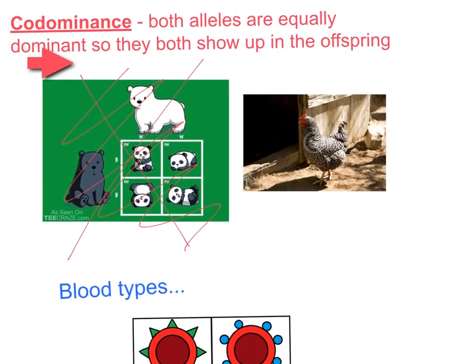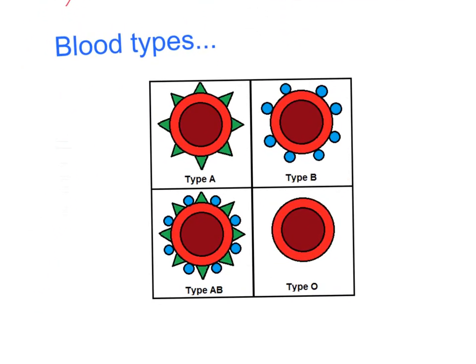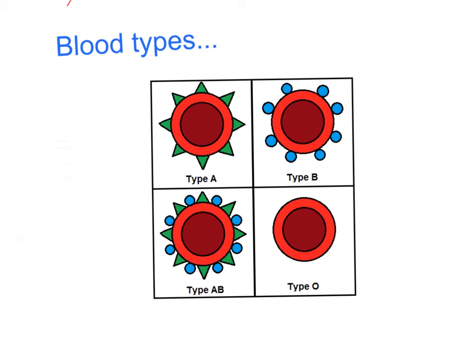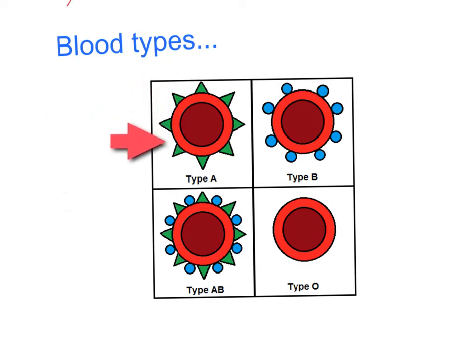Another example that might be interesting to you is blood types in humans. Many of you have probably heard that there are multiple different blood types: type A, type B, type AB, and type O. There's also something called the RH factor, which incorporates A negative, A positive, B negative, B positive, AB negative, AB positive, and O negative and O positive — but we're not going to talk about that today. Today, we are going to focus on the actual blood type itself. If you look at these pictures, it shows you a really simplistic view of what a red blood cell looks like. If you are type A, you have these little antigens on the outside of your blood called A antigens. If you are type B, you have B antigens.